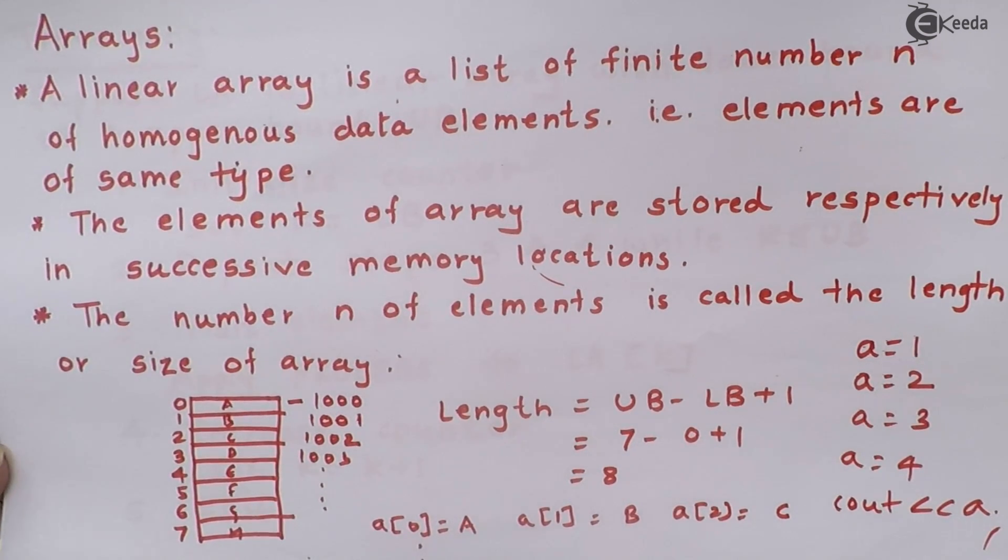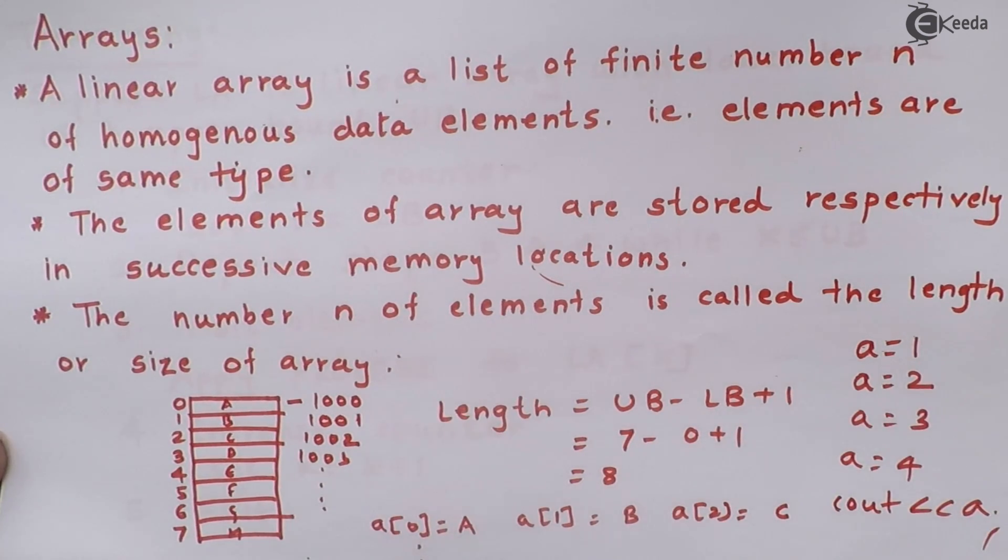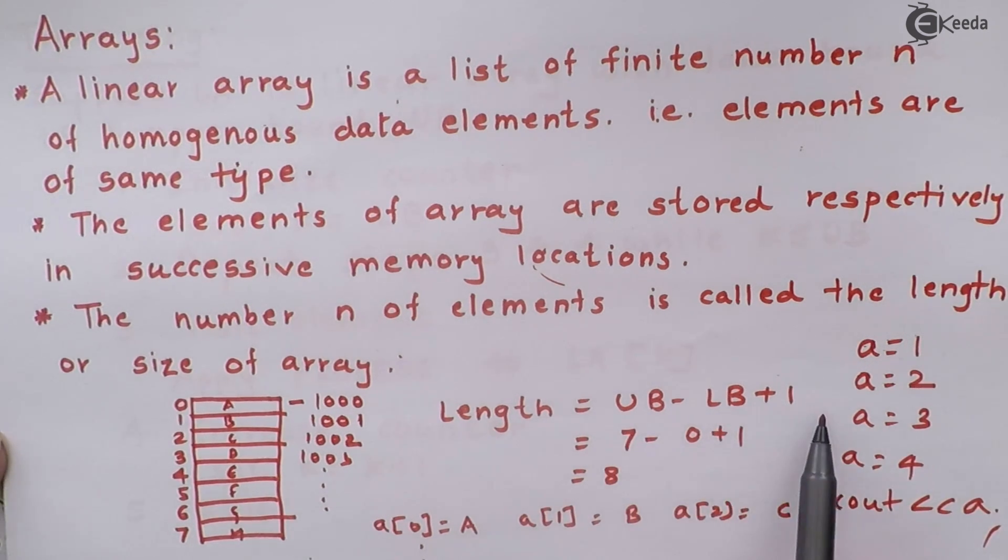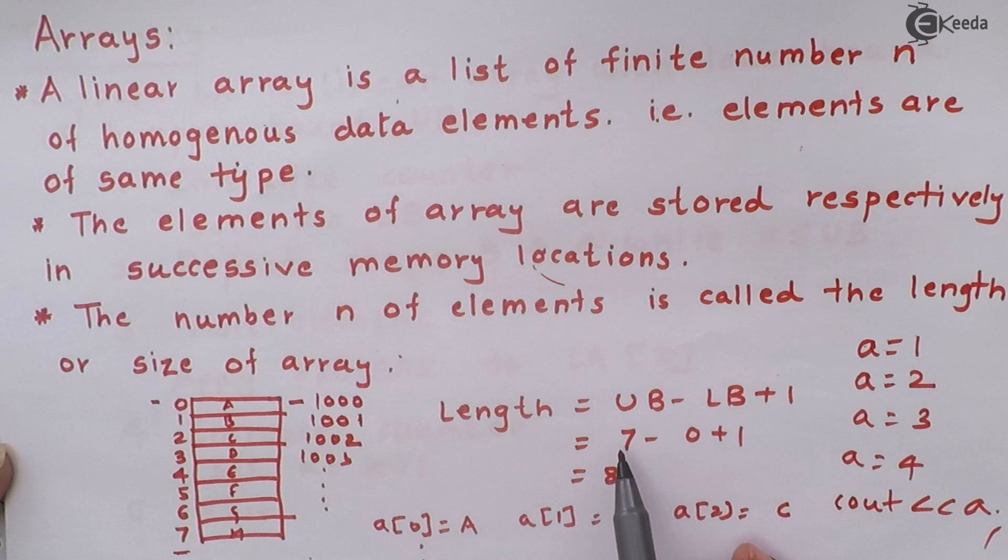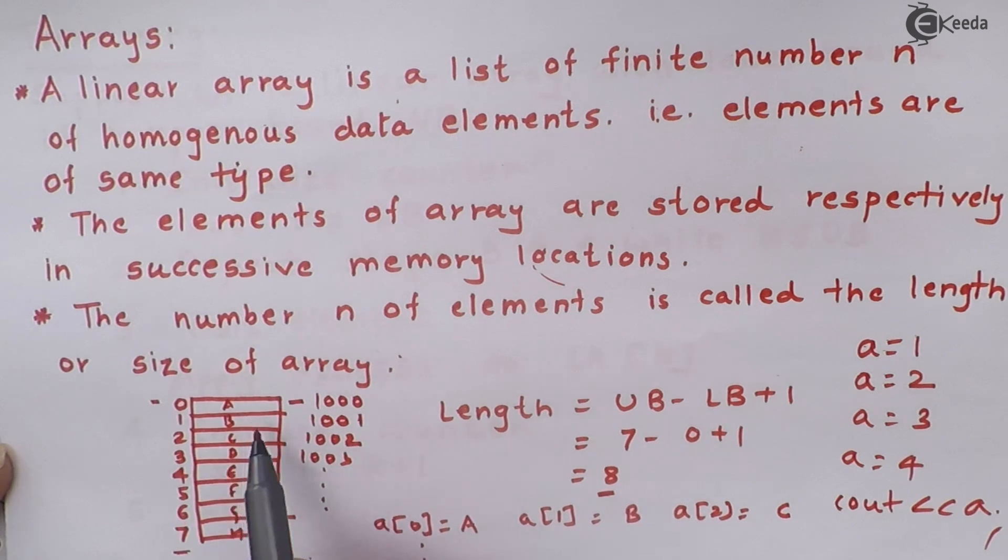So in this way we store an element in array. Now number of elements of the array is called as length of the array and it can be calculated by using formula length is equal to UB minus LB plus 1, where UB is called as upper bound, LB is called as lower bound. Here upper bound is the upper limit of an array which is 7 here and lower bound is lower limit of an array which is 0. So 7 minus 0 plus 1 is going to be 8. So the length of this array is 8.